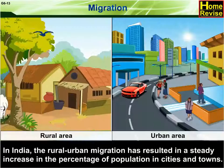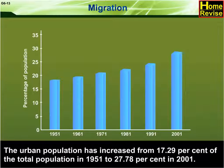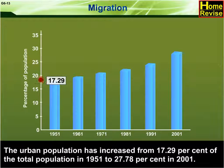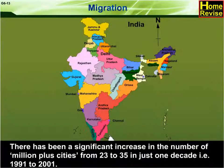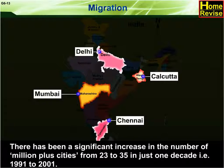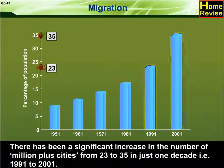In India, the rural-urban migration has resulted in a steady increase in the percentage of population in cities and towns. The urban population has increased from 17.29% of the total population in 1951 to 27.78% in 2001. There has been a significant increase in the number of million-plus cities from 23 to 35 in just one decade, i.e. 1991 to 2001.